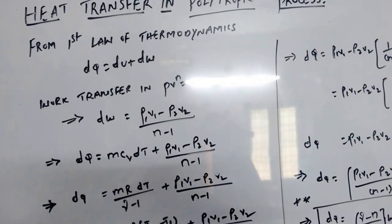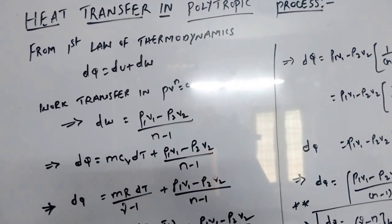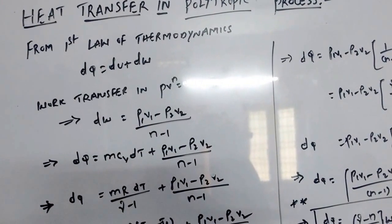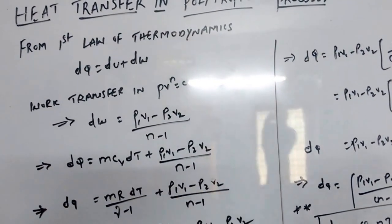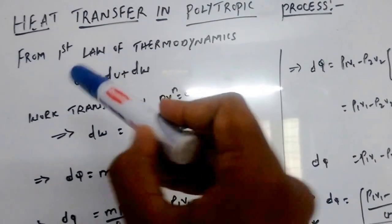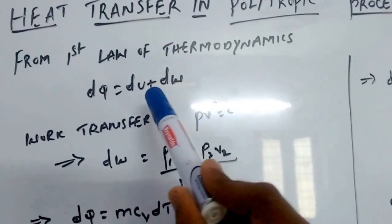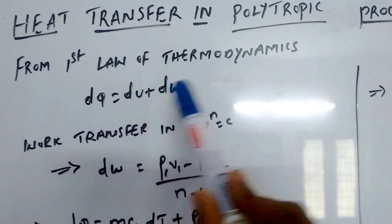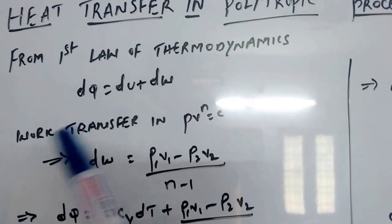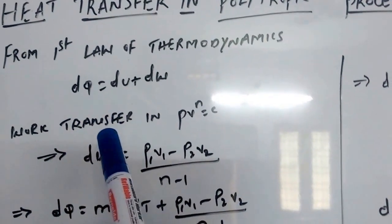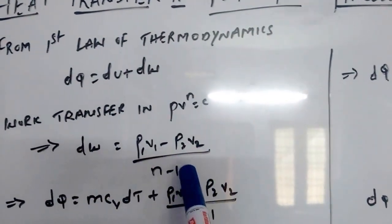We will discuss heat transfer in a polytropic process. The polytropic equation is PV^n equals constant. From the first law of thermodynamics we can write dQ equals du plus dW. In the earlier video, the work transfer was derived as P1V1 minus P2V2 divided by n minus 1.